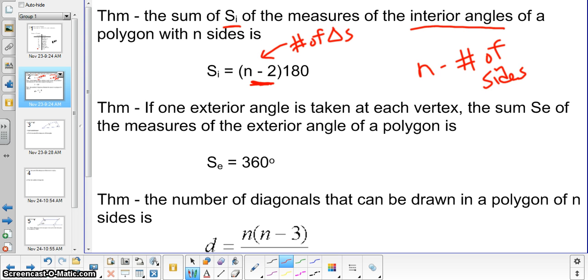The next theorem is the exterior angle, which is taken one at each vertex. The sum S sub e of each polygon is 360 degrees. We will explore this a little bit more in class as to where this formula is actually coming from.